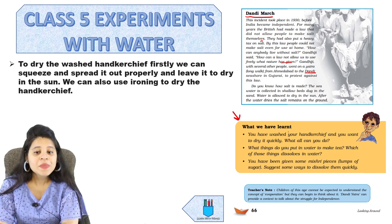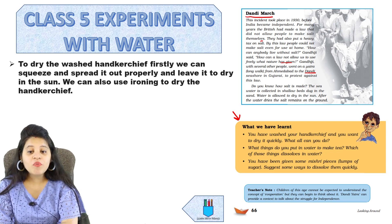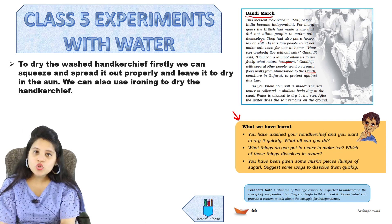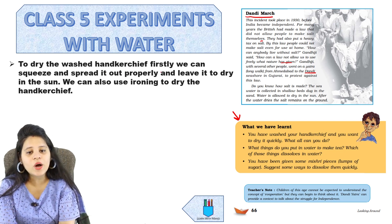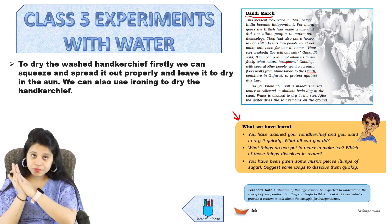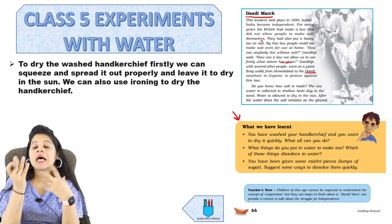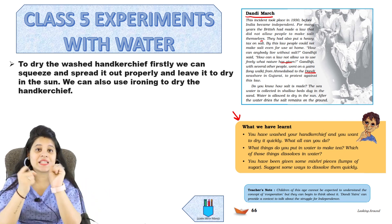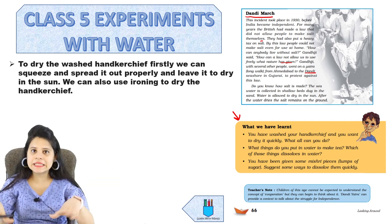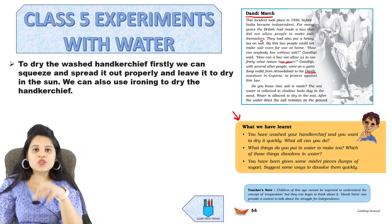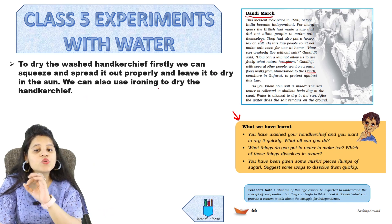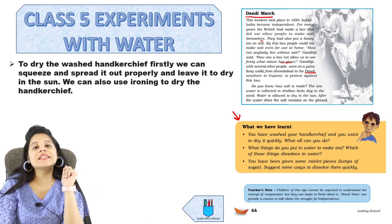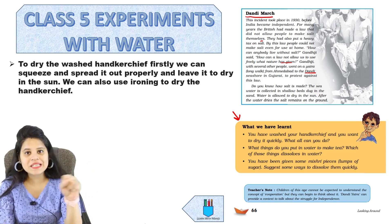Let's go through some questions. You have washed your handkerchief and want to dry it quickly — what can you do? To dry a washed handkerchief, firstly you can squeeze it and spread it out properly, then leave it to dry in the sun. You can also use ironing — the heat will dry it in about 2 minutes.